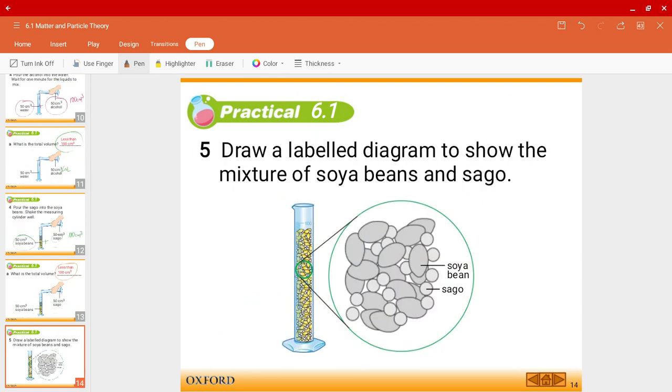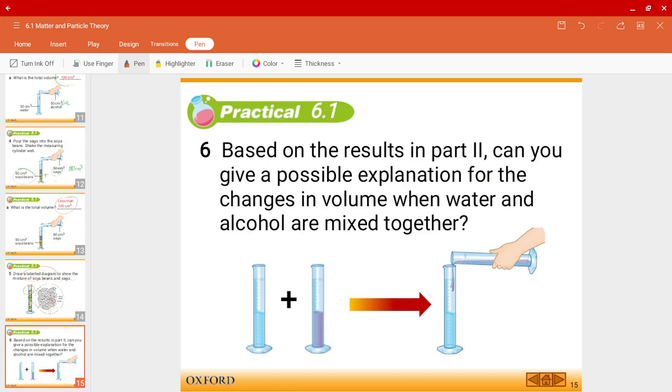Now, if you look carefully, if I draw the label diagram to show the mixture of the soy beans and sago, you'll notice that the sago are actually taking up the space in between the soy beans. Okay, and you can see over here, it's not really 100 cm3. So in other words, we can apply the same principle when we added water and the alcohol.